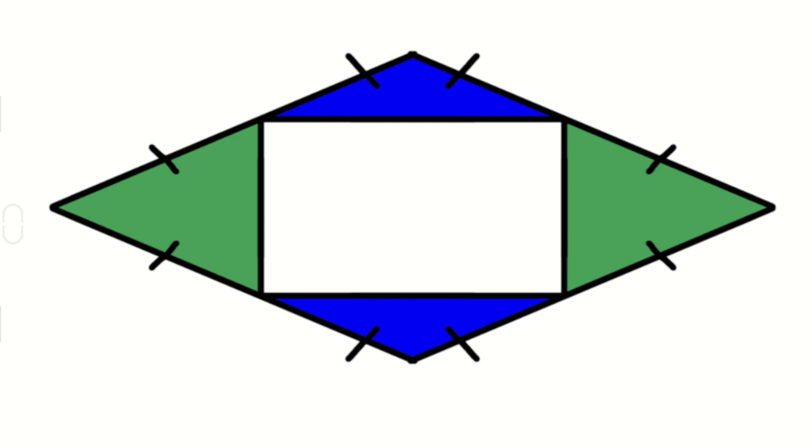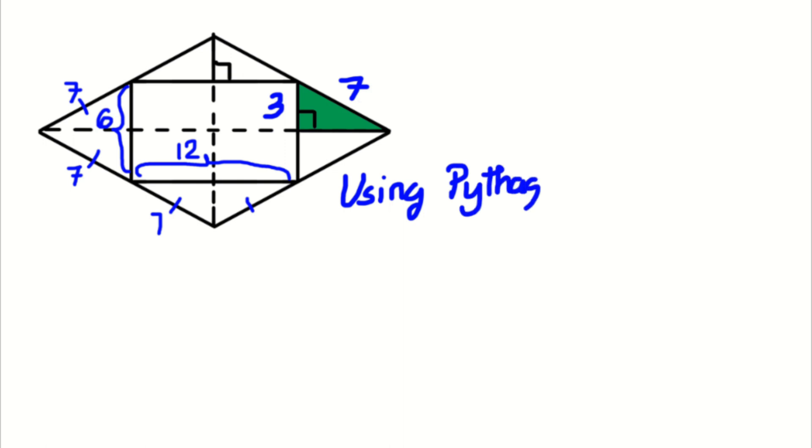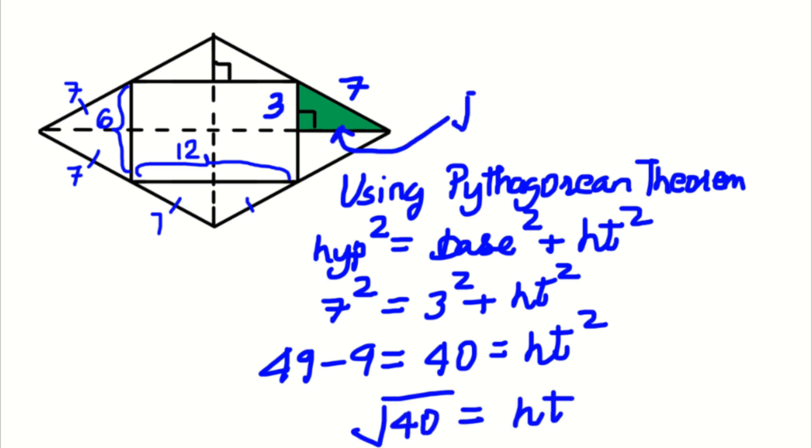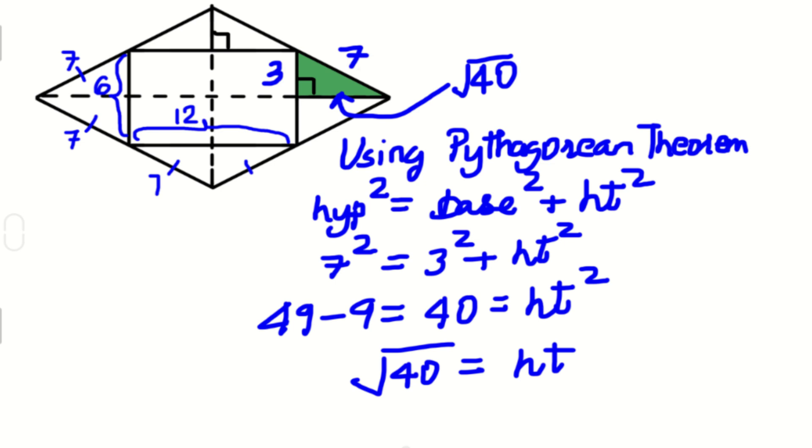Now that we know that there are isosceles triangles, we can draw a perpendicular here, and it'll be the midpoint of the base. So the base of this triangle is half of 6, which is 3. This side is 7. We can now calculate the height of the perpendicular by using our handy-dandy Pythagorean theorem. Plugging values in, you can get the height as root 40.